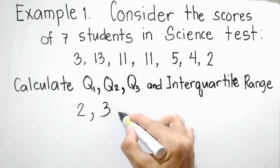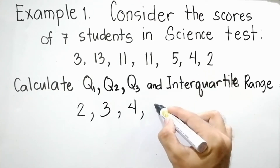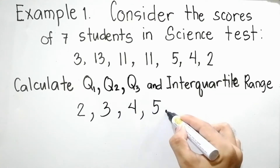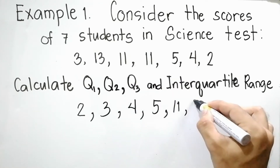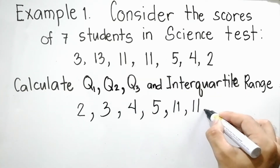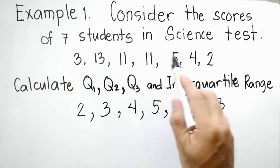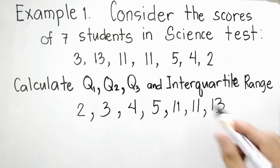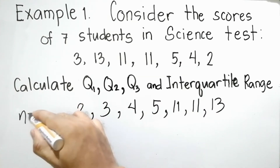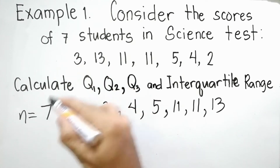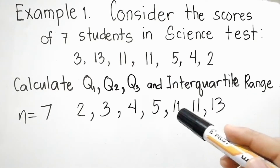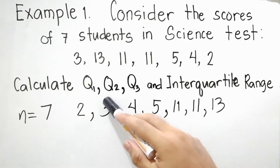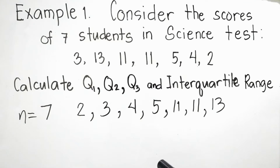Continuing the ascending order: 4, 5, 11, 11, and 13. If you count — 1, 2, 3, 4, 5, 6, 7 — our n is equal to 7. We can easily identify the middle value, Q2, which is the median, since it is between the least value and the greatest value. As you can see, if we separate the values, we can easily identify Q2, or what we call the median.